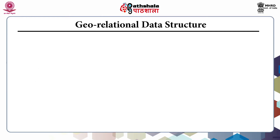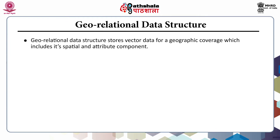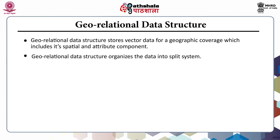Now coming to geo-relational data structure. Geo-relational data structure stores data for a geographic coverage which includes its spatial and attribute components. Spatial data describes the location of spatial features whereas attribute data describes the characteristics of spatial features. Geo-relational data structure organizes the data into a split system, which means it stores spatial data into graphic files and attribute data into a relational database.